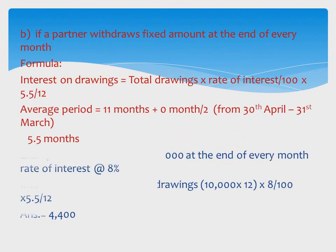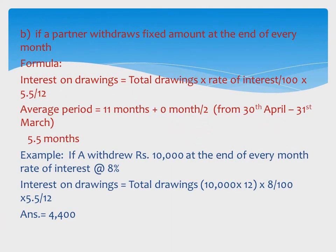Next case: if a partner withdraws a fixed amount at the end of every month. The formula is: Interest on Drawings = Total Drawings × Rate/100 × 5.5/12, where 5.5 is the average period. This is calculated as (11 months + 0 months) / 2 = 5.5.